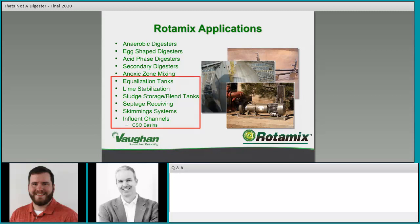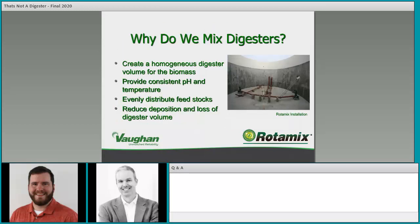Many of these applications aren't tied to any biological process or digestion. Before discussing non-digesters, let's talk about why we mix digesters for comparison. We mix digesters to create a homogeneous digester volume for the biomass, to provide consistent pH and temperature, and to evenly distribute feedstocks. These criteria help maximize efficiency of the biological process, making sure the biomass is converting volatile solids into biogas as quickly and efficiently as possible.